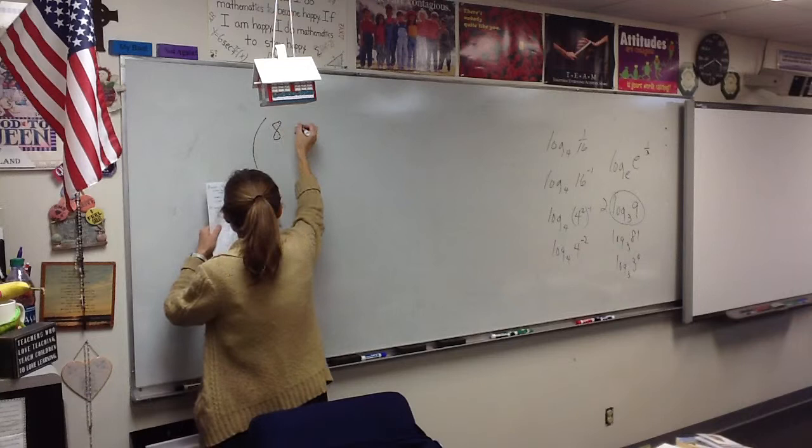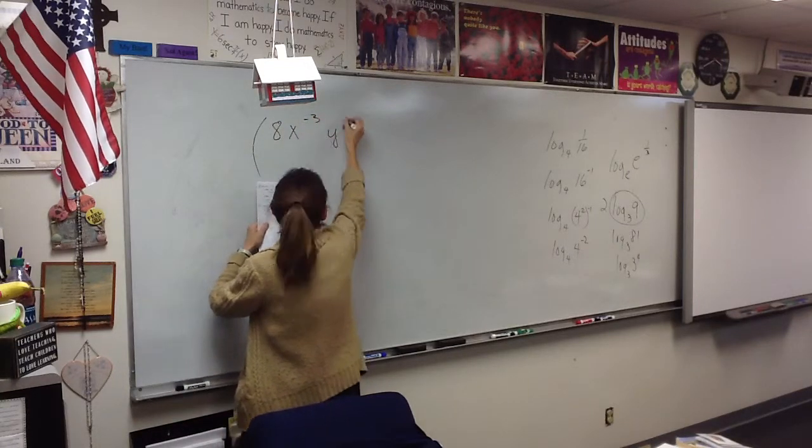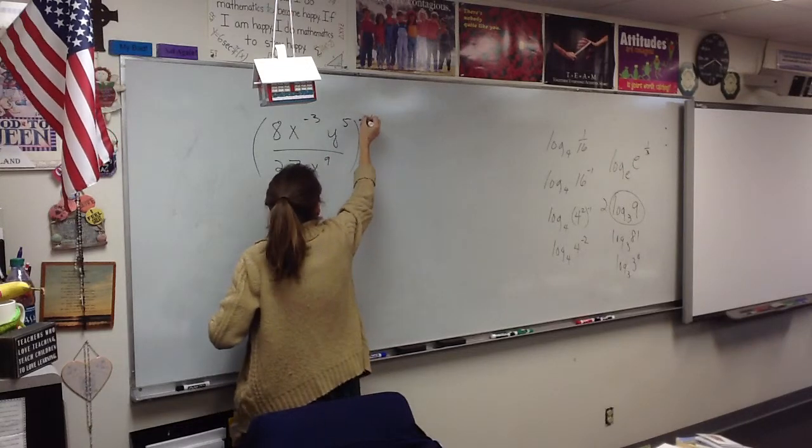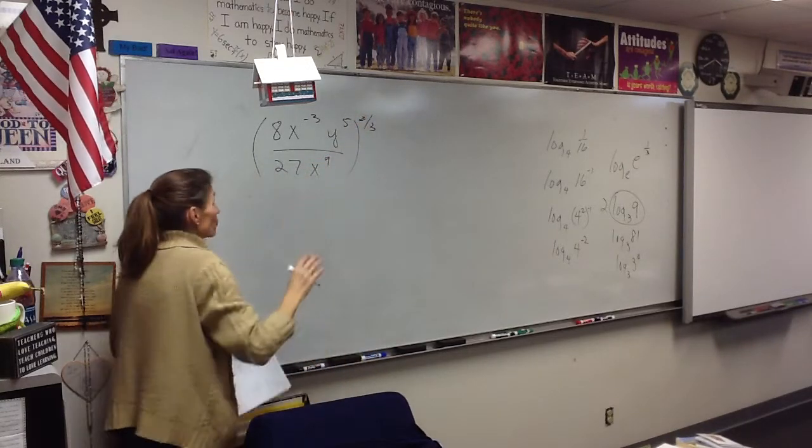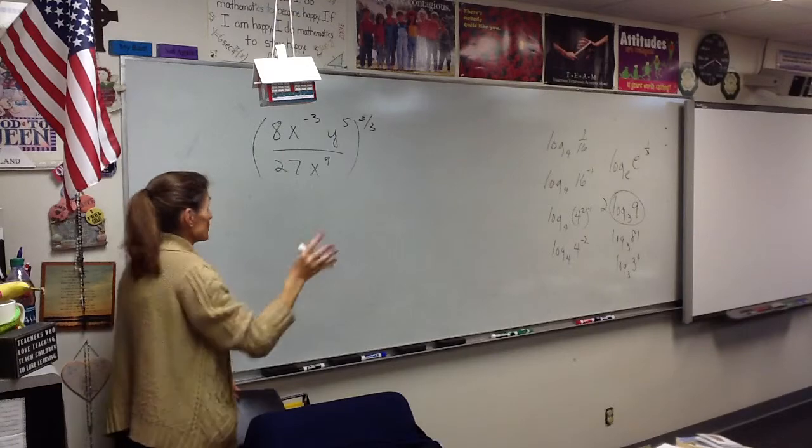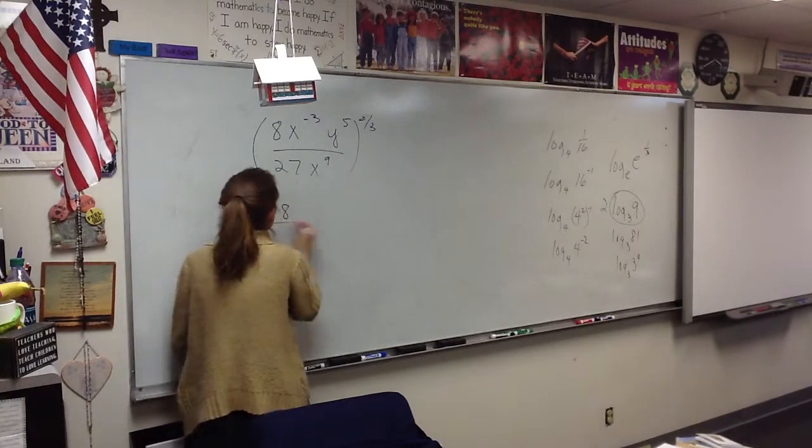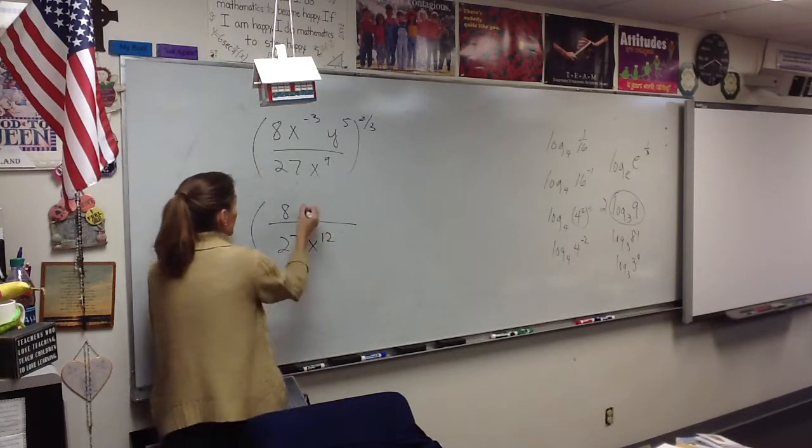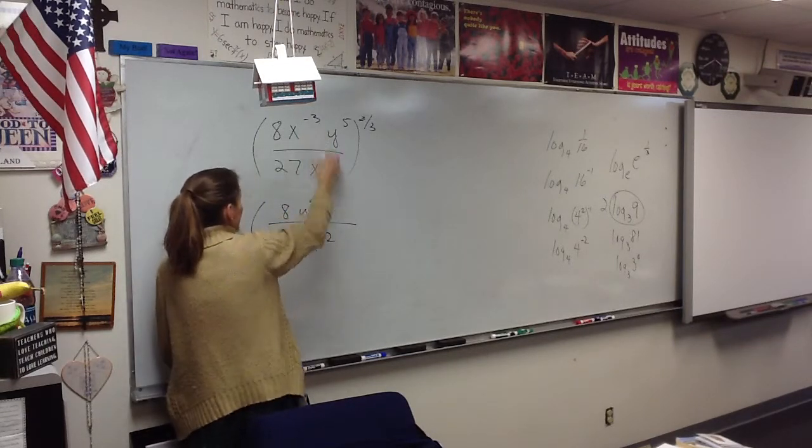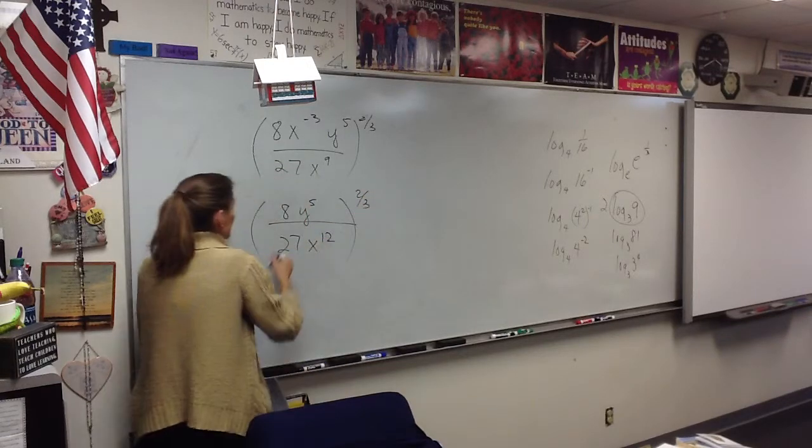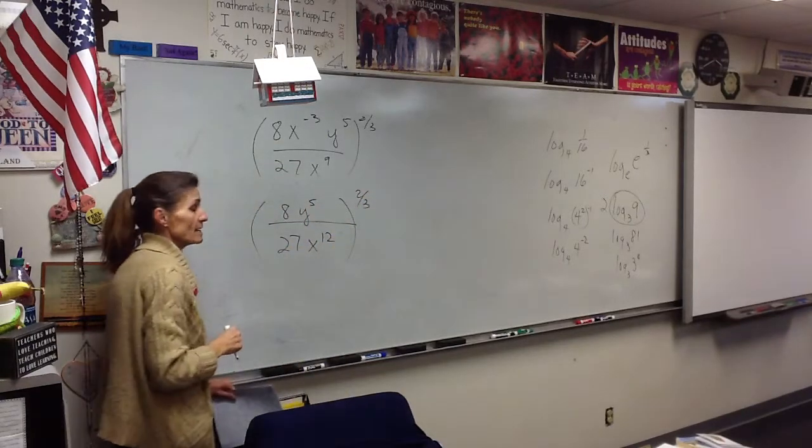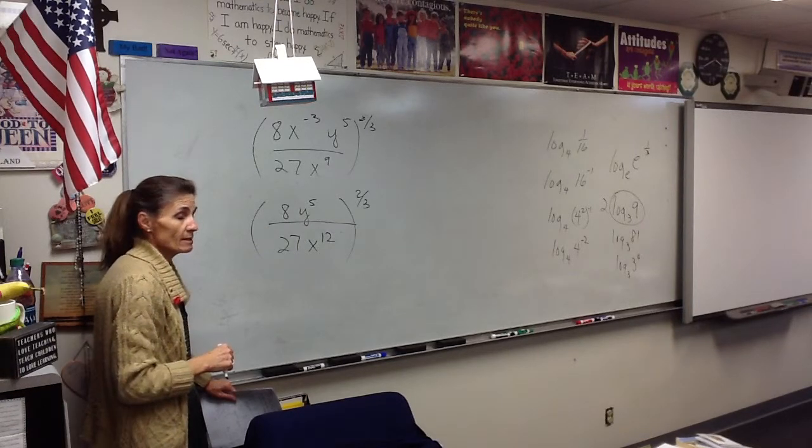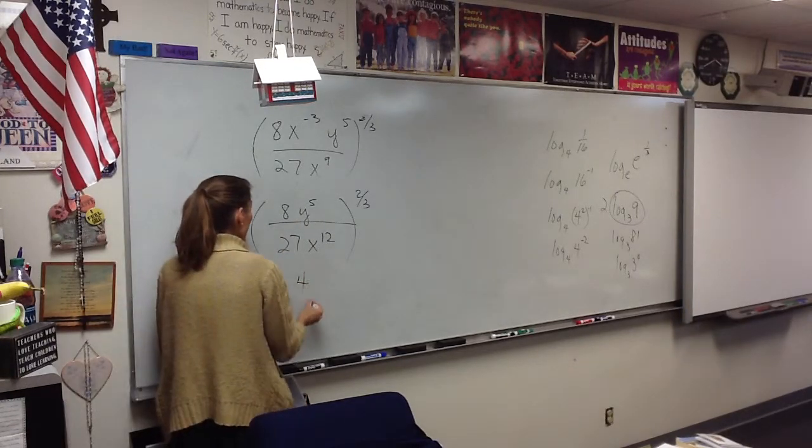So we have 8 over 27 times x to the negative 3 over y to the 5th. You can do this in several different orders, but I'm going to do it in the order I like best because we've got to get going here. So we have 8 over 27. I'm going to bring this guy down. That gives me 12 x's in the denominator because there's already 9 there, and I'm bringing 3 more down. So 8 to the 2 thirds. What does 8 to the 2 thirds mean? Cube root of 8 squared.